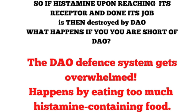Once histamine has reached its receptor and done its job, it gets destroyed by another enzyme — and this is a really big deal. This is called diamine oxidase, or DAO, and it's like the cleanup agent of histamine. In a person who doesn't have a histamine problem, histamine is released normally and then DAO comes in and cleans up afterwards, so the swelling goes down.